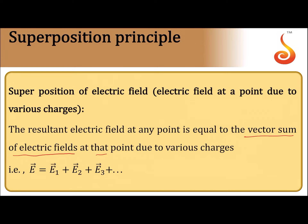Notice one thing: electric field is also a vector, so we have to take the vector sum. The net electric field E is equal to E1 plus E2 plus E3 and so on. This is similar to what we had in the case of forces.